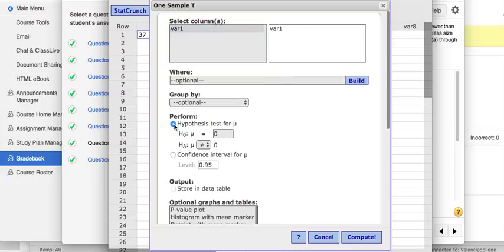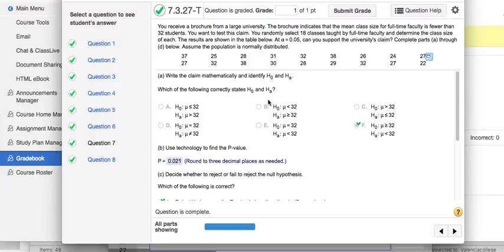And in this case, I'm going to do a Hypothesis test. Now, I don't remember what this test was in particular. So let me click back to the problem real quick. So it looks like in this problem, it says you receive a brochure from a large university. The brochure indicates that the mean class size is fewer than 32 students. All right. So the claim is that the mean is fewer than 32 students.